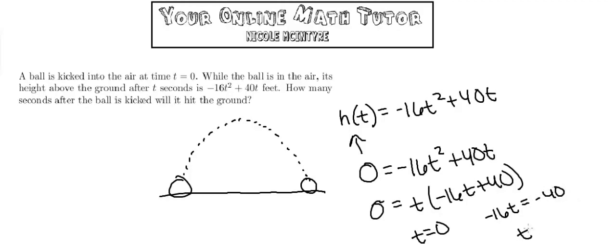Simplifying, I get t equals negative 40 over negative 16, which equals 40 over 16.